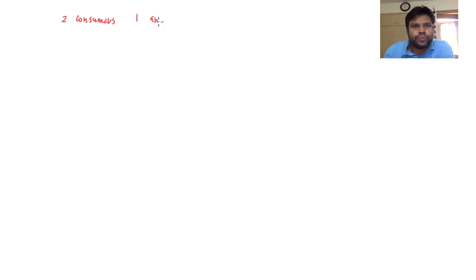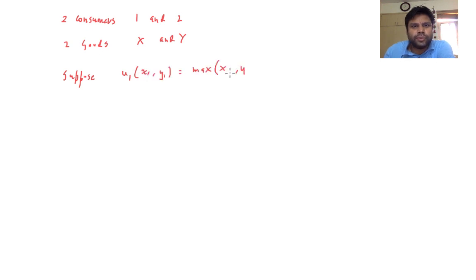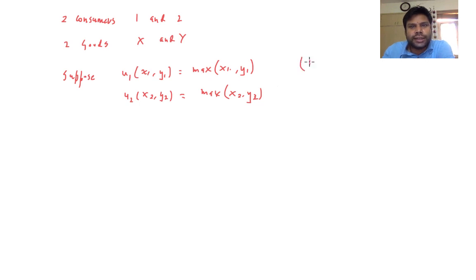Welcome. In this video we'll solve a pure exchange economy problem. Consider an environment where there are two consumers, one and two, and two goods x and y. Suppose the utility of consumer one is max(x1, y1) and the utility of consumer two is max(x2, y2). We want to figure out the set of all efficient allocations when the endowment of individual one is (10, 0) and the endowment of individual two is (0, 10).